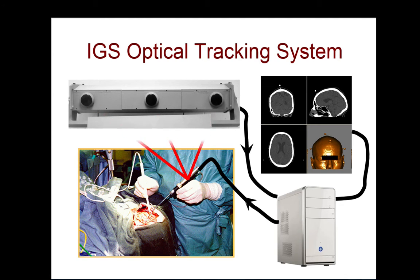This camera then returns a signal to the computer, which uses its internal map — a CT image in which there are fiducials or other markers to identify positions on the anatomy — to determine where the probe is located relative to the map, the CT image.